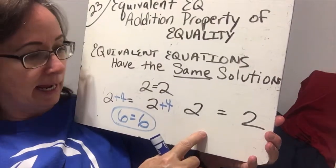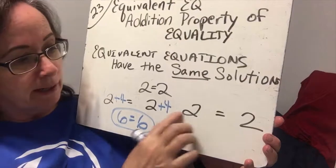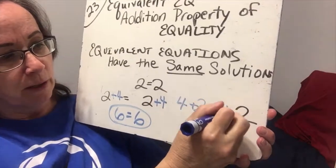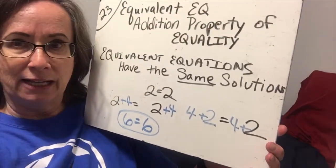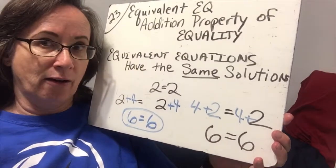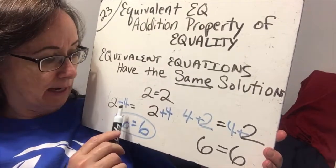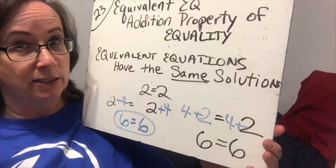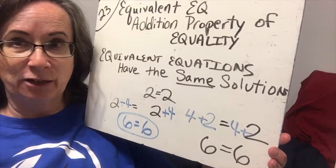Now, does it matter which order I do it? I put the 4 after the 2 — does it matter if I put the 4 in front of the 2? Let's put 4 plus 2 and 4 plus 2. So now I changed the order and put the 4 in front of the 2, but when I add, I still get 6 equals 6. So it does not matter in which order we add two numbers together — we're still going to get the same result.